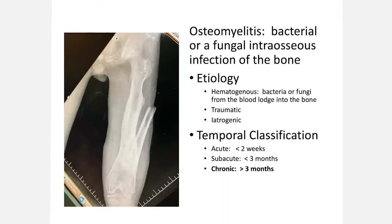Osteomyelitis is a bacterial or fungal intraosseous infection of the bone. It has three main etiologies: hematogenous, which means there is a bacteremia in the blood that eventually settles into the bone; traumatic, from open fractures; and iatrogenic, from bone fixation surgery. This is a 12-year-old that presented to my clinic with an open fracture, and unfortunately he went on to develop diffuse osteomyelitis.